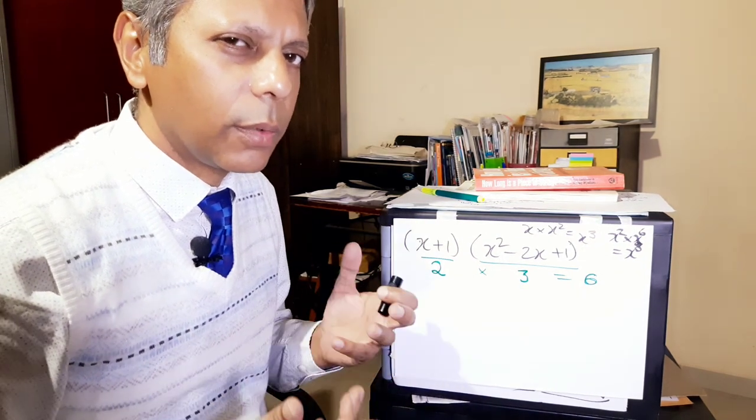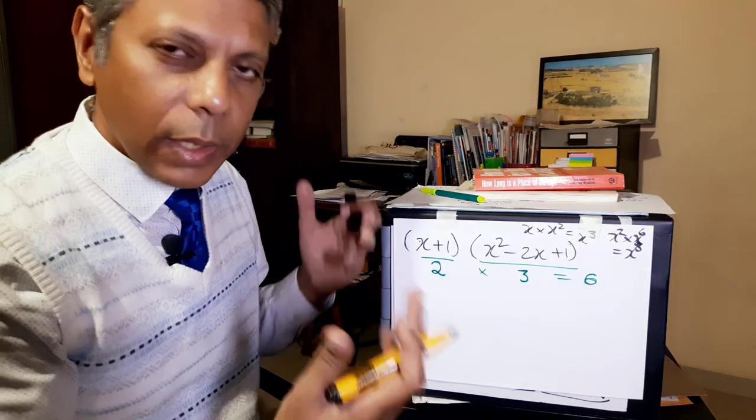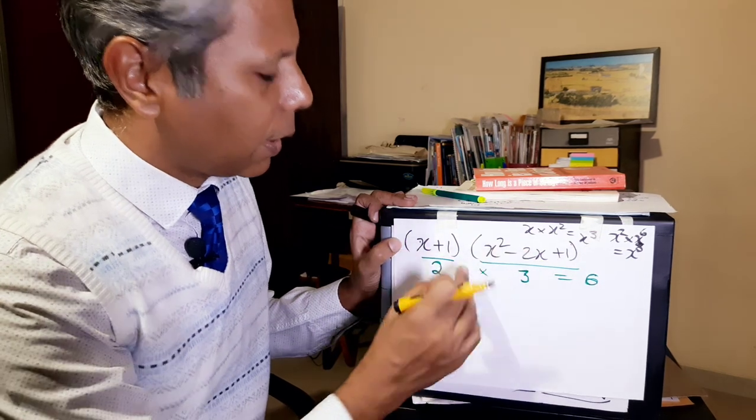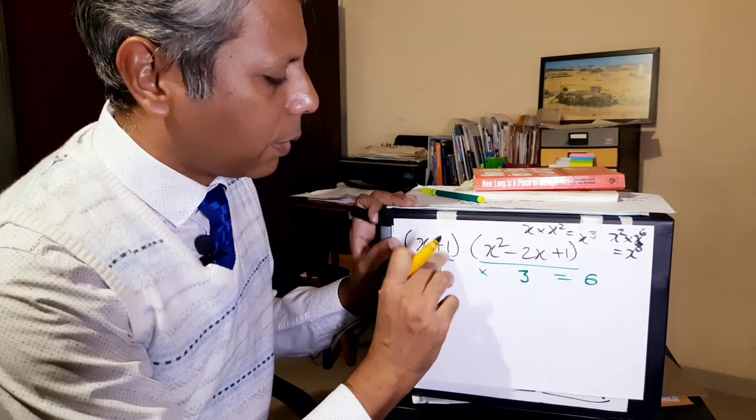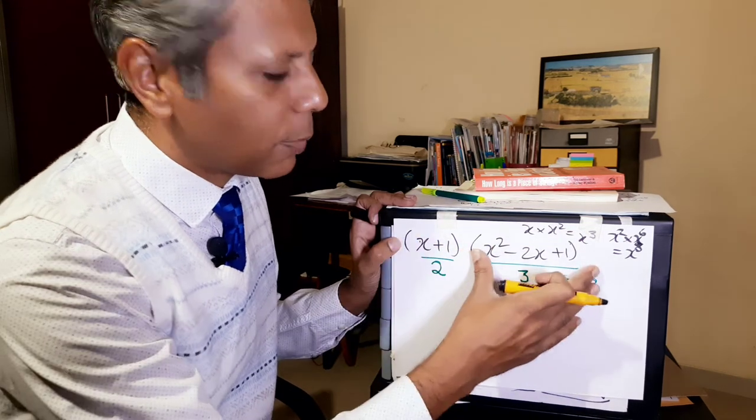Let's go ahead and multiply them. First thing is multiply this entire thing with x, and to that you add 1 into this entire thing. In this case it is 1, so it will be the same thing.